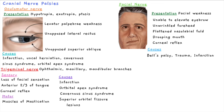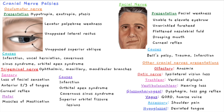Causes include Bell's palsy, trauma, infarction, and Ramsay Hunt syndrome, where the patient also has ear issues. It is important to differentiate between an upper motor neuron lesion or stroke, where the top half — the eyebrows and forehead — will be intact, versus a facial nerve or lower motor neuron lesion, where both the upper and lower areas of the face are affected.